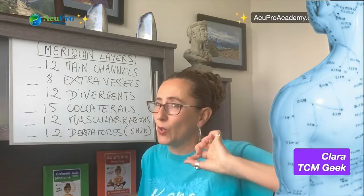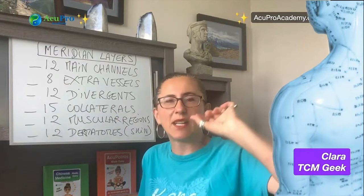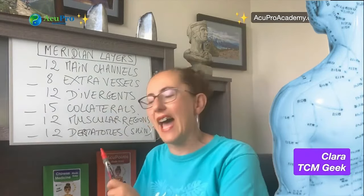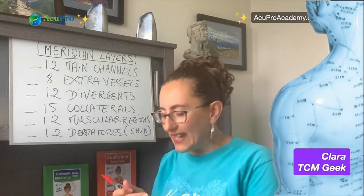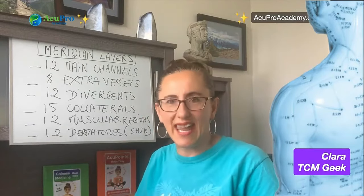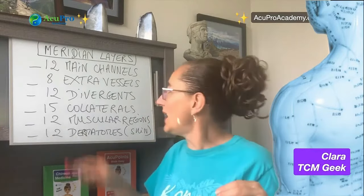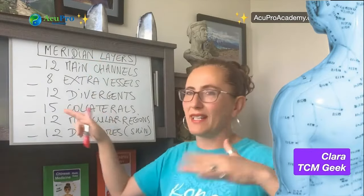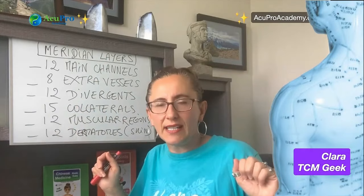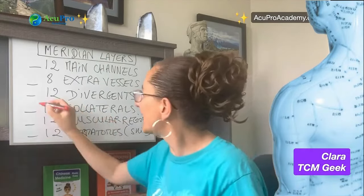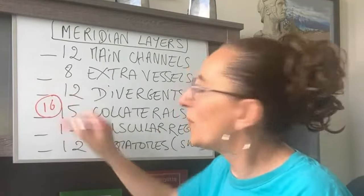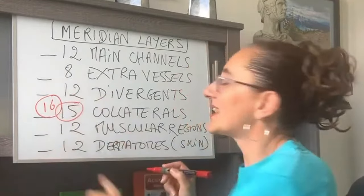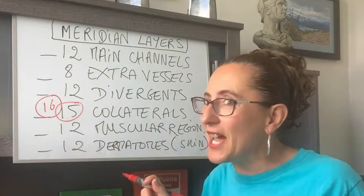Today we're going to talk about all the collaterals and the connecting points that the collateral use — the 15 collaterals. In a lot of books, we're going to see 16 collaterals, but some books will say there are 15 collaterals.